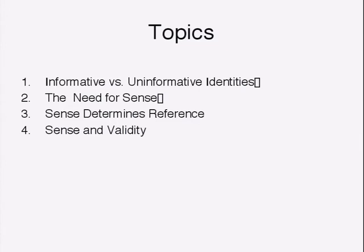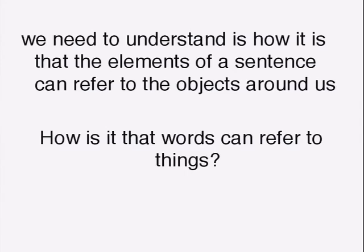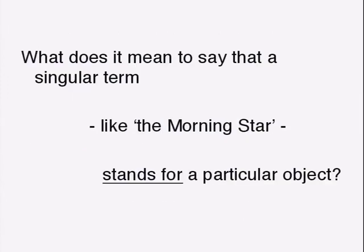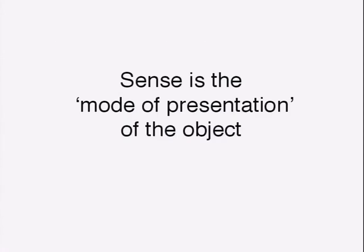Here's the main move that Frege makes in these first few pages. That thing about informative and uninformative identity is a very technical question — it would not come to you straight off as really the base problem when you're interested in how language works. But Frege's great move is: we're trying to understand how it is that the words in a sentence can refer to the objects around us. This is the fundamental problem — how is it that words can refer to things? In order to explain the distinction between informative and uninformative identities, you need this notion of sense — your way of getting onto the object. And sense is what explains informativeness.